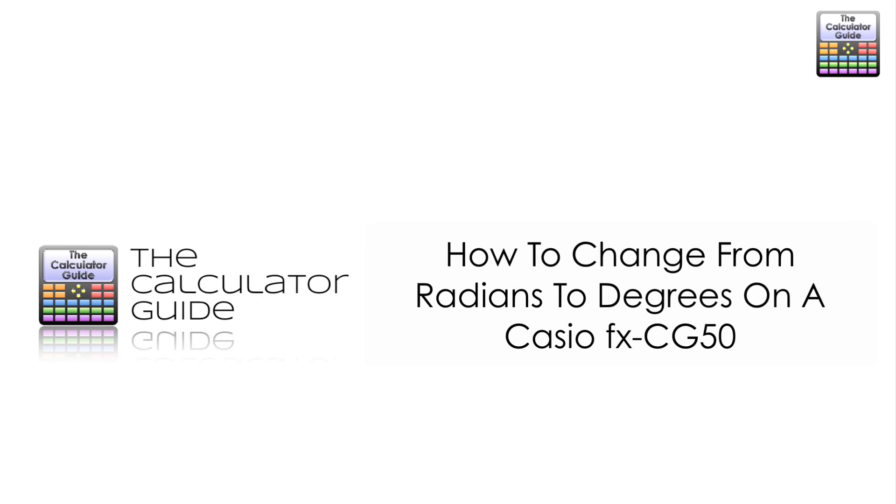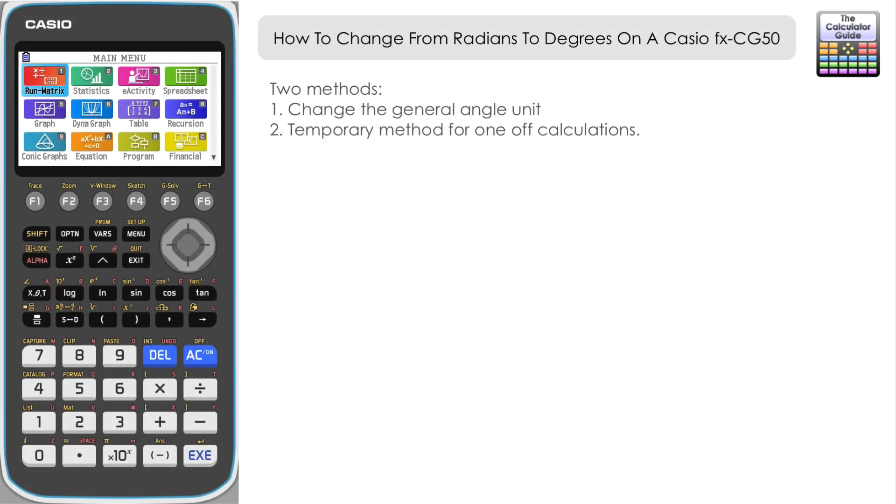Hello and welcome to the Calculator Guide video on how to change from radians to degrees on a Casio fx-CG50. We're going to explore two methods in this video: firstly, how to change the general angle unit, and secondly, how to temporarily change the angle unit for one-off calculations that are in a different angle unit than what you have set your calculator to.